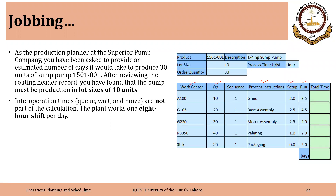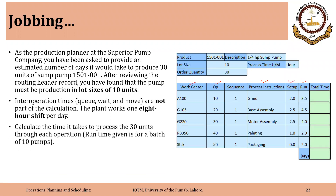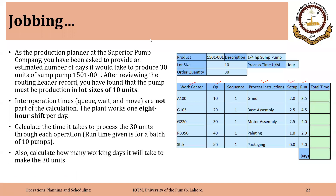The plant works one 8-hour shift per day. Calculate the time it takes to produce the 30 units through each operation. The run time given is for a batch of 10 pumps. Calculate how many working days it will take to make the 30 units — or in other words, the minimum time required to make 30 pumps.